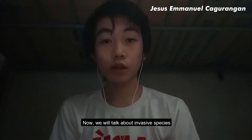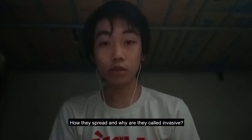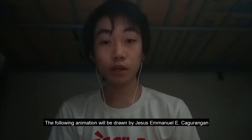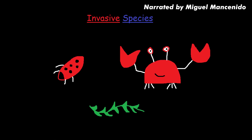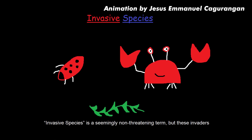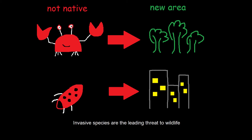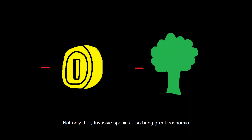Now we will talk about invasive species — what they are, what dangers they pose, how they spread, and why they are called invasive. Invasive species is a seemingly non-threatening term, but these invaders, maybe large or small, have a devastating effect on wildlife. By definition, invasive species are organisms that are not native to a particular area. Invasive species are the leading threat to wildlife, having affected 42% of endangered species. Not only that, invasive species also bring great economic and environmental harm to their invaded location.